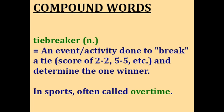Tiebreaker. When two teams are playing each other and the score ends in an equal number like 2 to 2 or 5 to 5, this is called a tie. But in many games and contests, we need one winner. So an extra activity called a tiebreaker is done to break the tie and determine the champion. In sports like soccer and basketball, this is often called overtime.